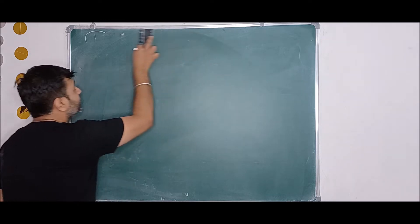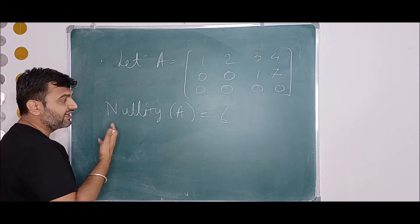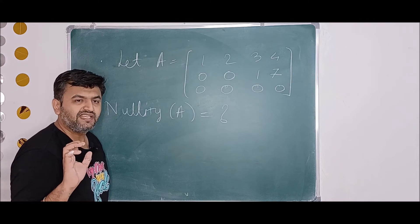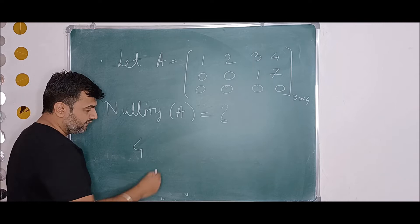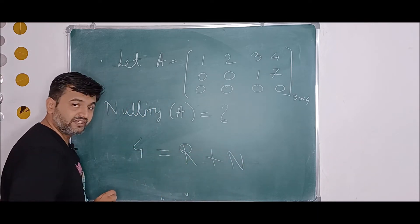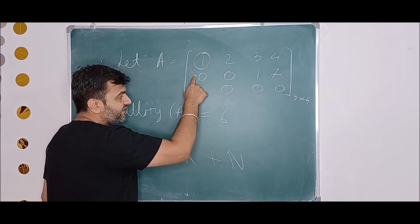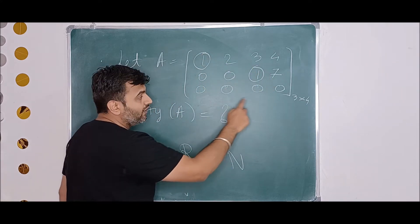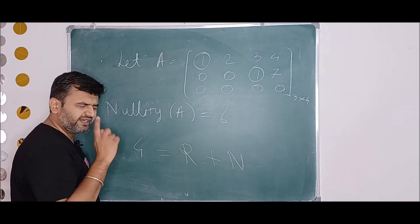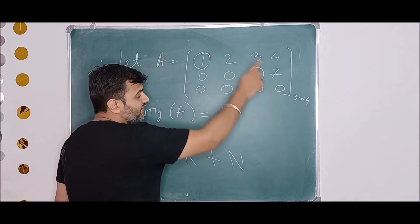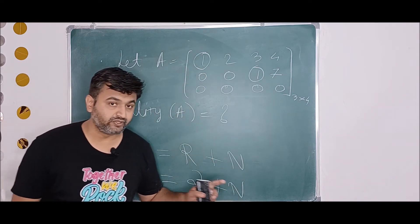Now let us look at some examples. For simple objective-type questions, they might give you a matrix and ask for the nullity. This should not take more than 10 seconds. The matrix is of order 3 cross 4, so the number of columns is 4. Using rank nullity: 4 equals rank plus nullity. The matrix is already in echelon form — you can see the leading entries with zeros below. There are two nonzero rows, so the rank is 2, and therefore the nullity must also be 2.